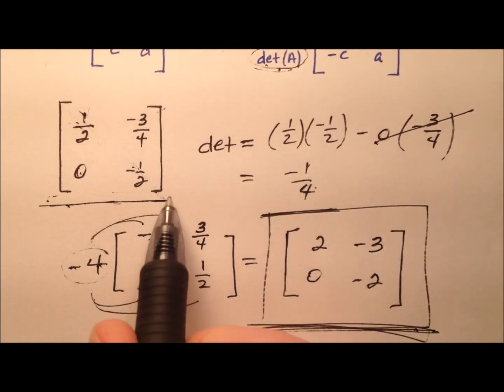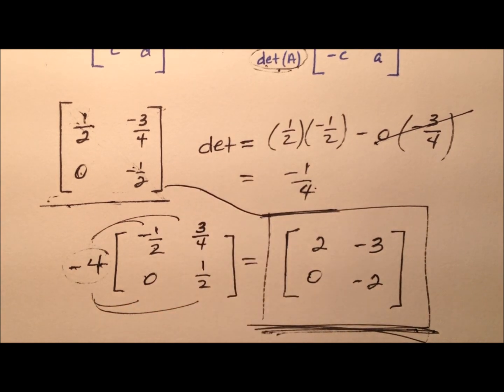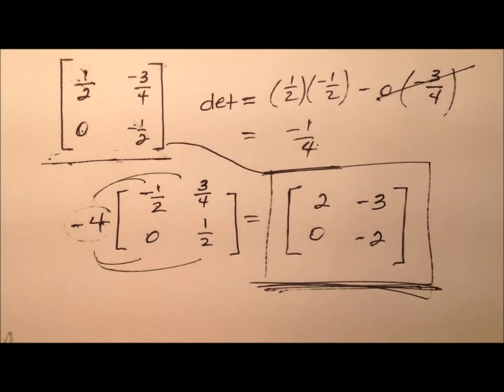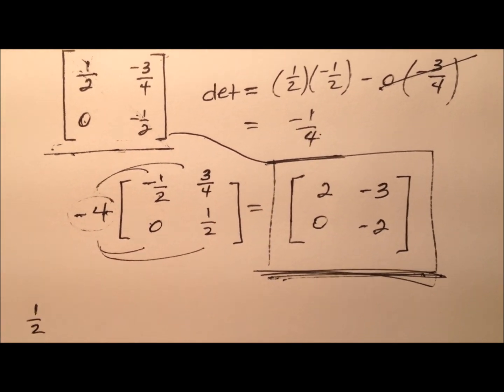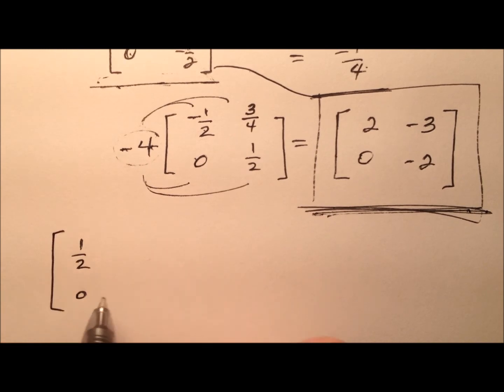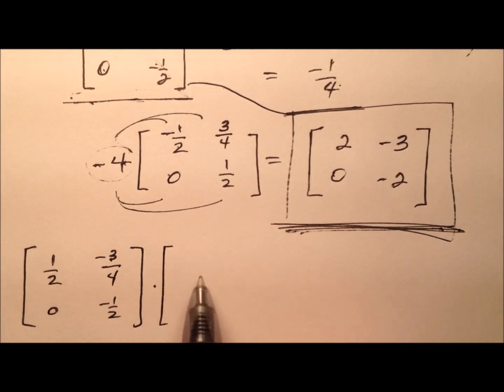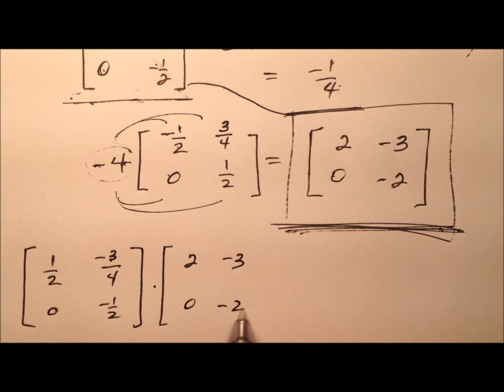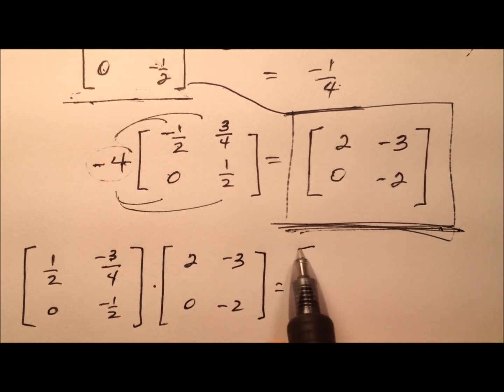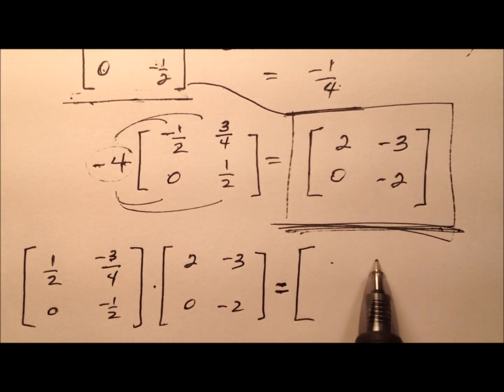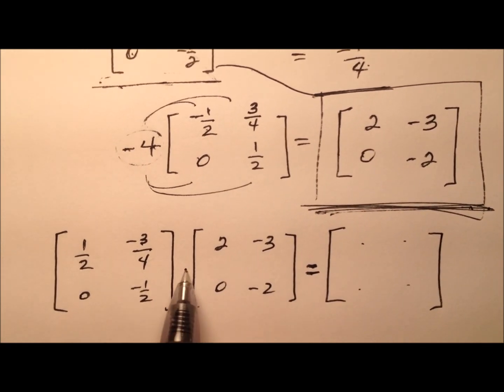But you don't have to take my word for it. Let's go ahead and multiply the 2 together and see if that product matrix is going to be the identity matrix. So I'm just going to go ahead and rewrite all these guys down here. Negative 3/4 and negative 1/2. And I'll multiply that by what we said was the inverse, and hopefully we'll get the identity matrix which is 1 0 0 1.